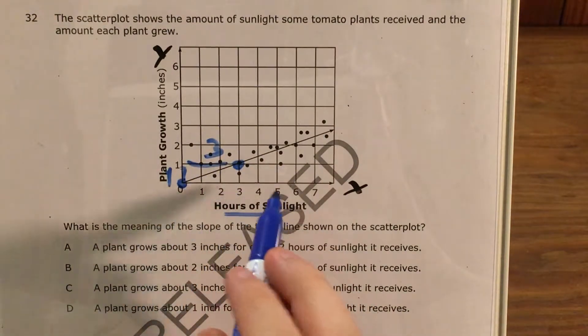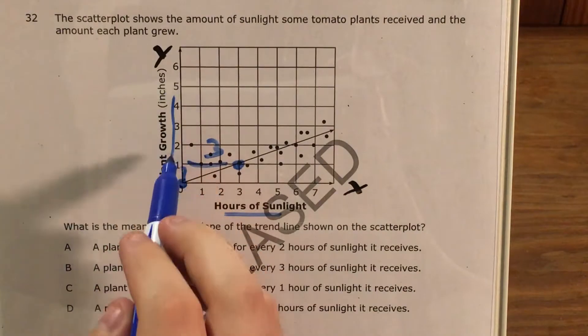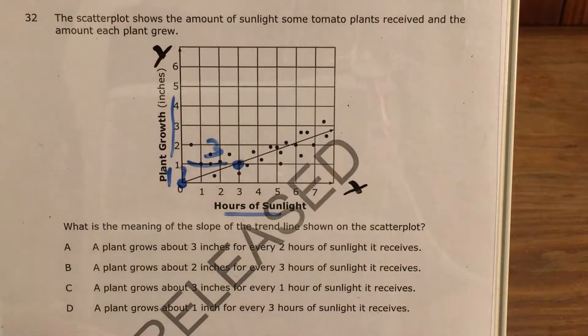Now of course, right or left is supposed to match hours of sunlight, and up or down is supposed to match the growth. So let's look for the answer choice that tells us that for 3 hours of sunlight, it grows 1 inch.